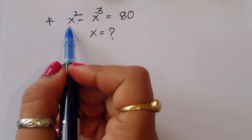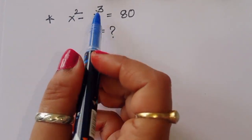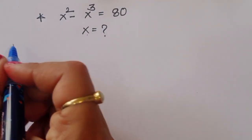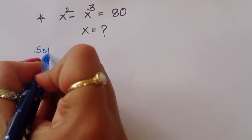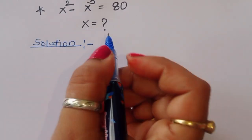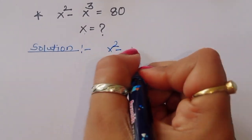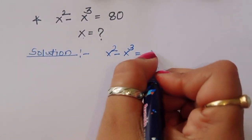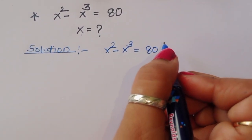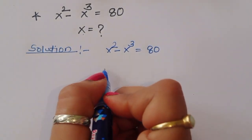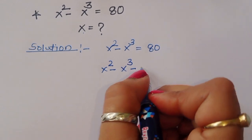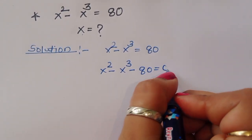The question is: given x squared minus x cubed equals 80, we have to find the value of x. So we write x squared minus x cubed equals 80, and then rearrange to x squared minus x cubed minus 80 equals 0.